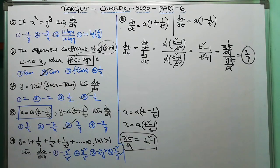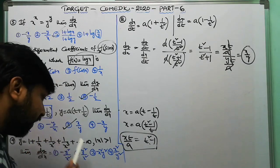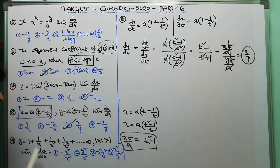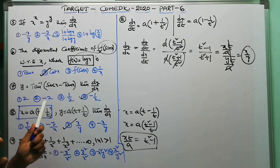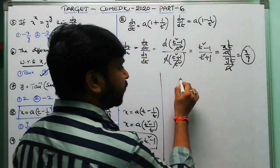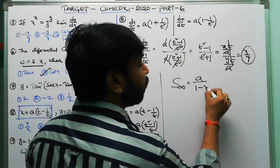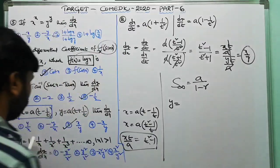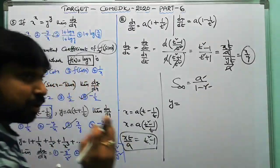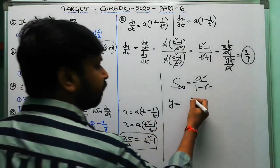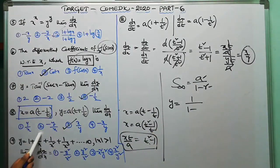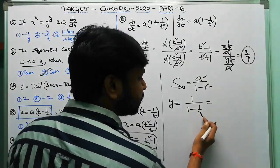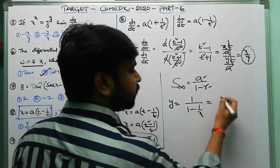Question 9: y equals 1 + 1/x + 1/x² + 1/x³ + ... to infinity, where x > 1. This is a geometric progression (GP). Using the infinite GP sum formula S∞ = a/(1−r), where a is the first term and r is the common ratio: a = 1, r = 1/x. So y equals 1/(1 − 1/x) equals x/(x−1).